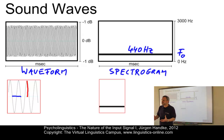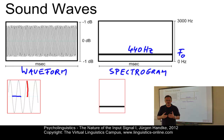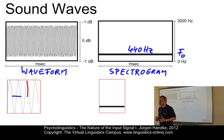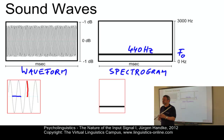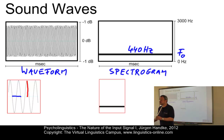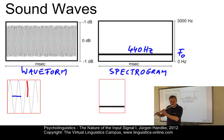What happens if we feed the simple tone produced by a sound source through a resonating body? For example, the body of a guitar, the vocal tract, or the tube of a flute. Let's take the flute as an example — this is what it sounds like when resonances are created by the flute body.